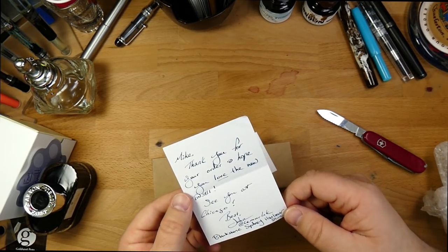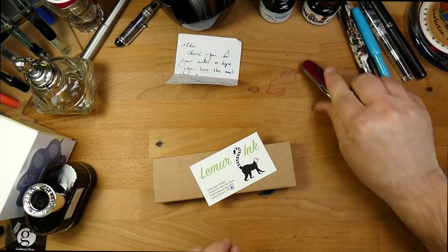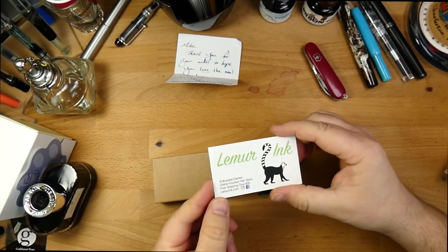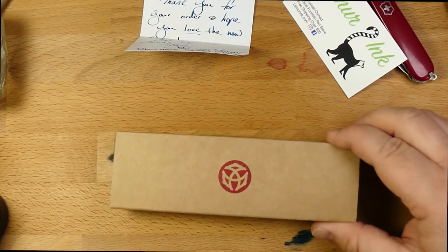There we go. What else is in here? I got like a card. There's a Lemur Inc. card and a little note. Thanks for your order. I hope you love the new Twisby. See you at Chicago. Best John. Right on. That's a fun little note. I like it when people include a note. Maybe old fashioned, but I like that. So go check out Lemur Inc. John is a cool guy and he's got good stuff at his store.